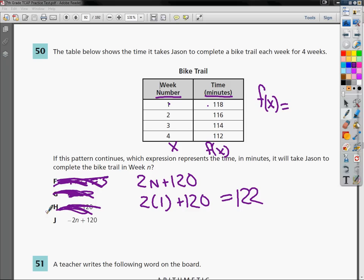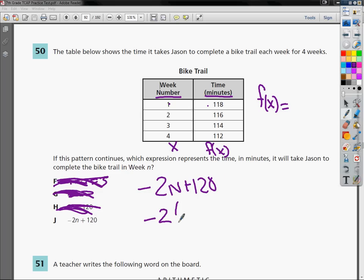So my only choice left is J. And let's just check to make sure it actually works. I have negative 2n plus 120. So if I'm going to do 1, I do negative 2 times 1 plus 120. Negative 2 times 1 is negative 2 plus 120 gives me 118. So when I plugged in this, I got this. That's a good thing.